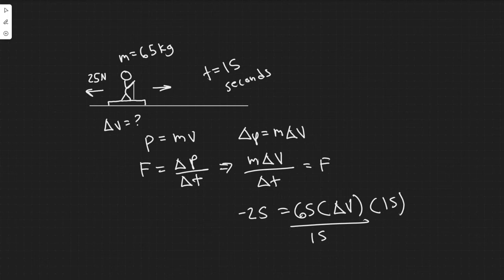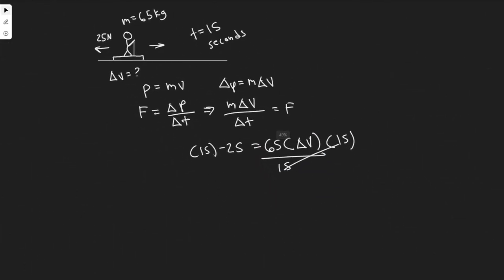So solving this you would multiply both sides by 15. When you do that you'll get 15 times minus 25 which is minus 375 is equal to 65 times the change in velocity.